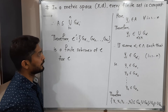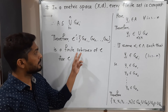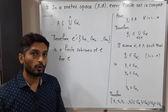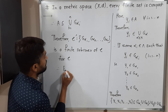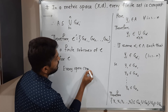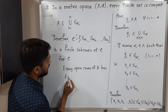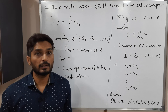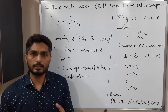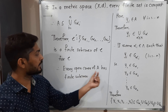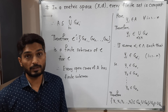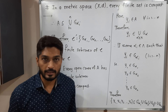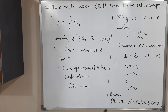Finite subcover means it has finitely many elements, it covers A, and it is a subcollection of script C. Since we started with any open cover of A and found a finite subcover, therefore every open cover of A has a finite subcover. By definition this means A is compact. In this way we proved that if you have a finite set in a metric space, then it is definitely a compact set. Thank you, see you.